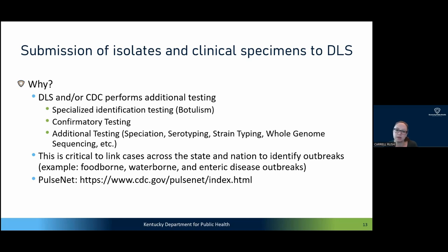If anyone is interested in learning more, I included the link for PulseNet — the laboratory network system across the country. Every state has a PulseNet lab and CDC, FDA, and USDA have PulseNet labs as well. Everyone is sequencing, for example, Salmonella isolates and loading them into a centralized database. This is how, when you hear about CDC investigating an outbreak of Salmonella linked to raw chicken from a retailer, they can do it through PulseNet.